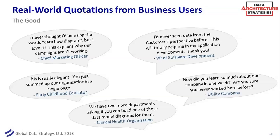On the lower left, this idea came from an early childhood educator — and again, business isn't always just sales and marketing. This was a teacher, and she said, 'this is really elegant — you just summed up our organization on a single page.' I think that is why people like these: they are elegant, they're simple, and you're flattering them in a way by describing their organization. And the right is a bit of a compliment, but it's not me — it's the model. We were working with a big utility company, went out for a week, came back, and played back the model. They said, 'how did you learn so much? Have you worked here before?' I said, 'no, I just asked leading questions.' You will look very smart if you learn to listen for nouns, listen for verbs, put it in the model, and you spell out their business.